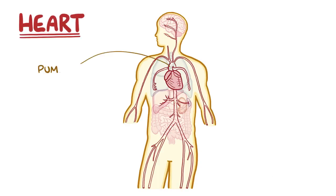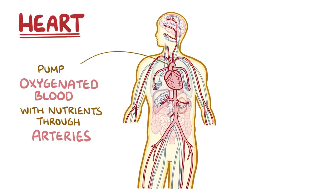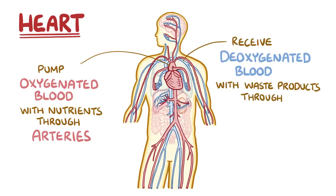The main job of the heart is to pump oxygenated blood with nutrients through the arteries to the body's tissues, and then receive back deoxygenated blood full of waste products through the veins.